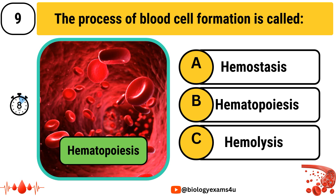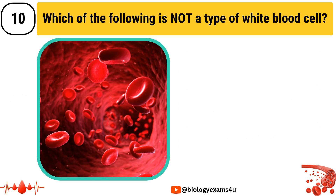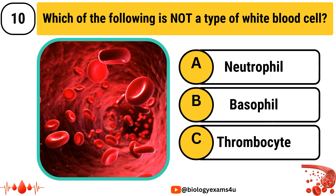Which of the following is not a type of white blood cell? The options are Option A: Neutrophil, Option B: Basophil, Option C: Thrombocyte.